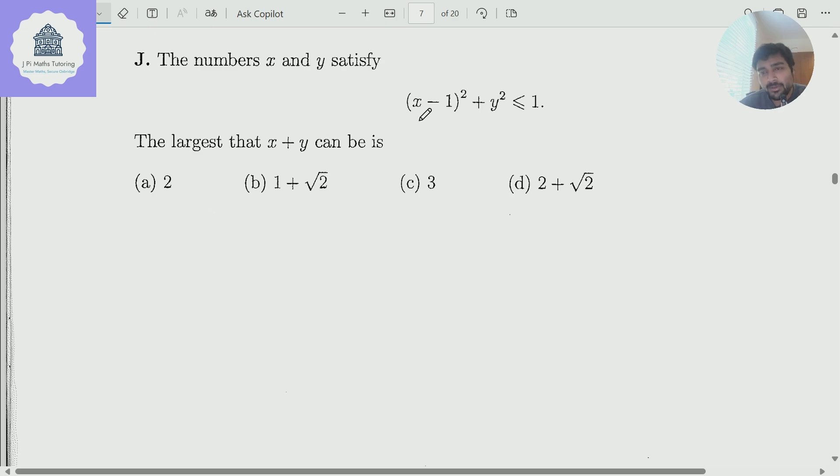Another thing I notice is both these terms here are non-negative. So I can certainly find an upper bound to this. It won't be the best upper bound, but it will be an upper bound. So this thing squared definitely can't be bigger than 1. And this thing squared definitely can't be bigger than 1. So that tells me that x must be less than or equal to 2. Because if x is bigger than 2, x minus 1 will be bigger than 1. And so when you square it, it will be bigger than 1. And similarly, y must be less than or equal to 1. And so therefore, the absolute maximum that x plus y can be is 2 plus 1, which is 3.